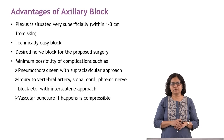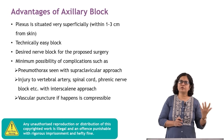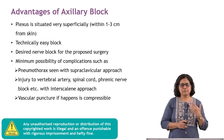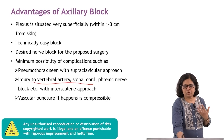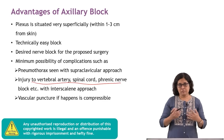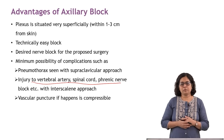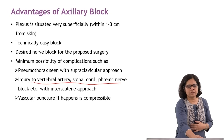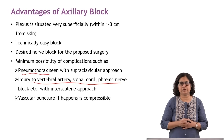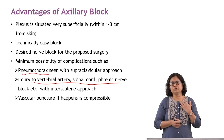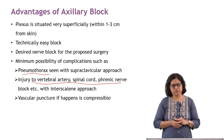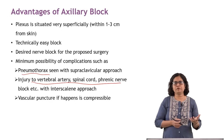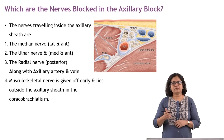There is a minimum possibility of complications. For other blocks: interscalene block can cause injury to the vertebral artery, spinal cord, and phrenic nerve block; Horner's syndrome can develop. With the supraclavicular approach, pneumothorax is a risk with quite a high incidence, and there can be injury to the subclavian artery. In axillary block, vascular puncture is possible but, being superficial, it can be easily compressed.